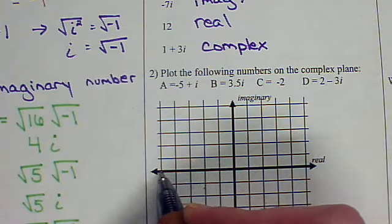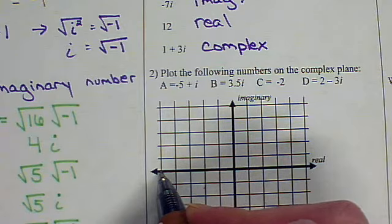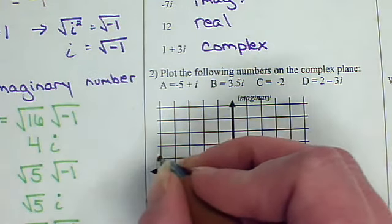1, 2, 3, 4, 5 parts negative real plus 1i. That would be right here.